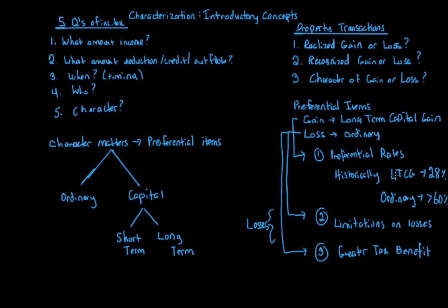Within long-term capital gain, there are some special items such as collectibles and what we call unrecaptured section 1250. I'll talk about those items in later videos, but it's possible that they get a higher rate than the normal long-term capital gain preferential rates. Over time, certain long-term capital gains have had lower rates — 15% and 20% — while collectibles had 28%. So there are actually groupings within the long-term capital gain category. Short-term capital gains practically speaking end up being taxed at ordinary income rates.